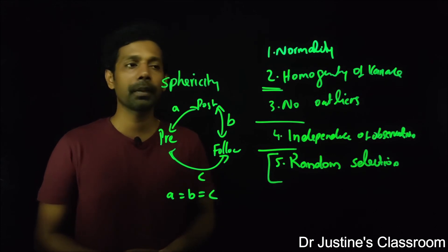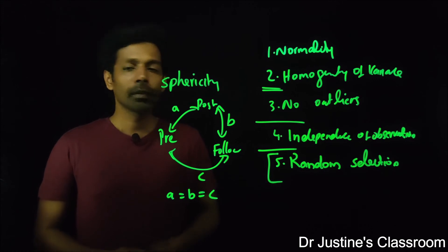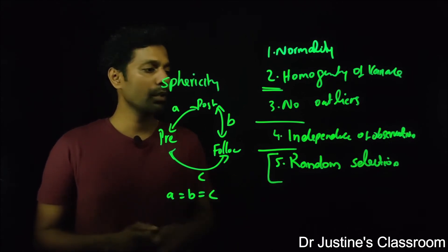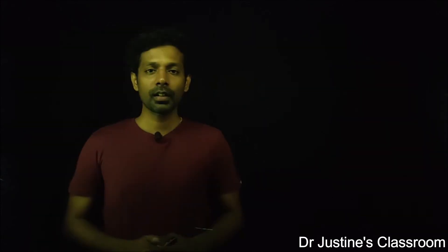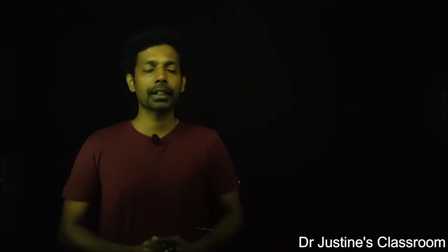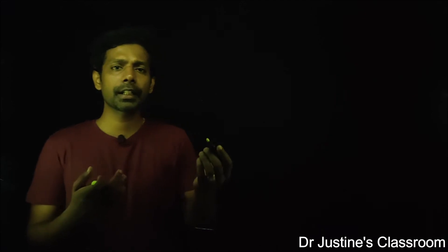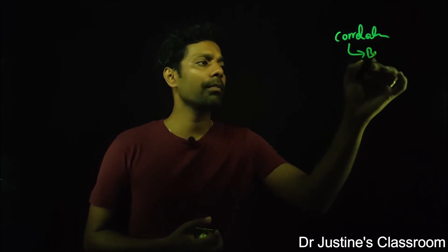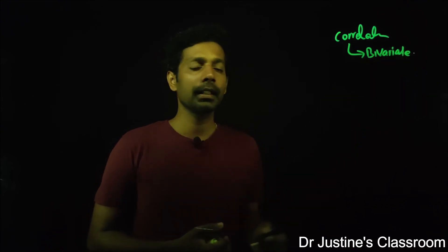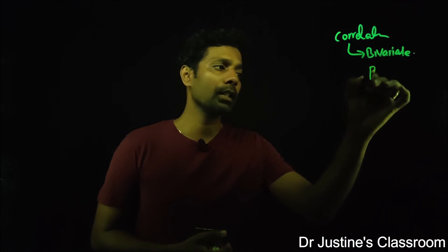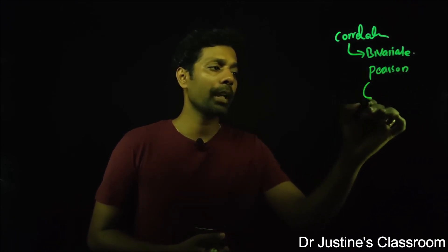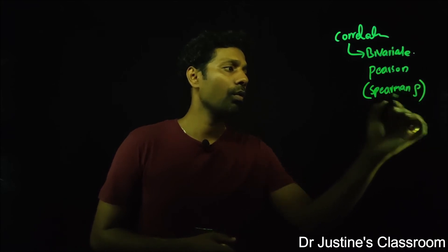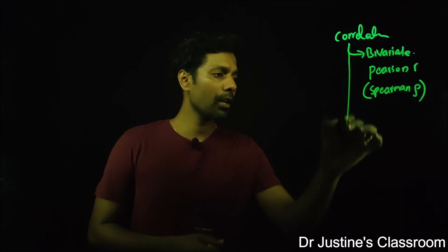If your data meets all these assumptions, you can use a parametric test; otherwise, you should use a non-parametric test. Doing a parametric test when assumptions are not met can lead to highly inappropriate results. Now let's look at the common parametric and non-parametric tests used in research. For finding relationships between variables, we use the correlation category.